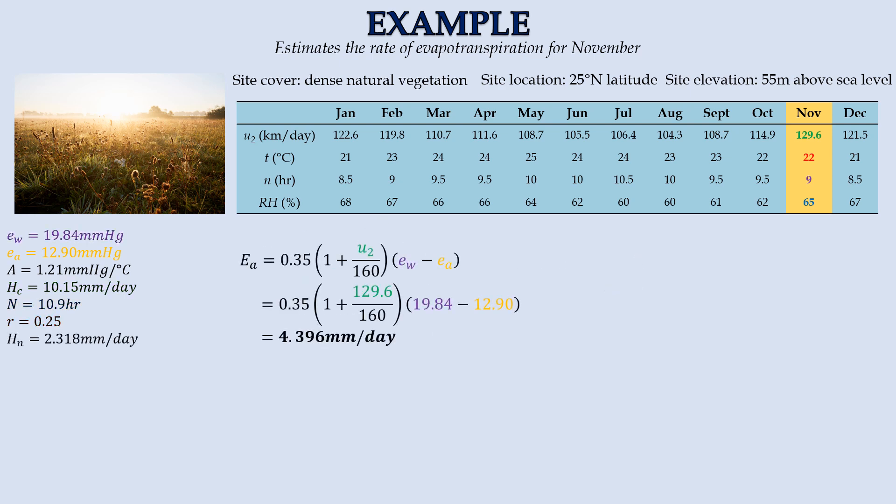The calculation of parameter Ea is more straightforward. By substituting the wind speed and vapor pressure values, it would be 4.396 mm per day.